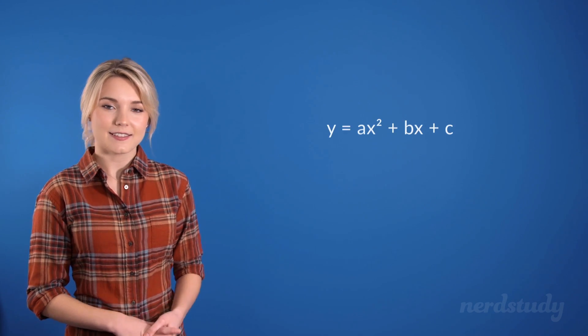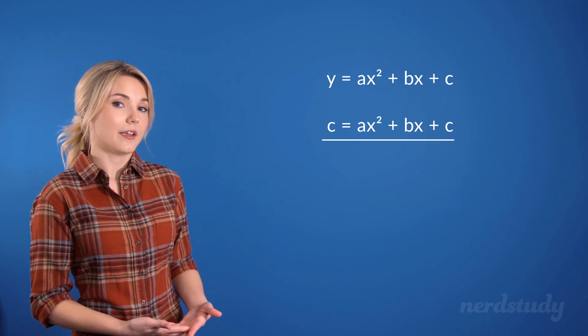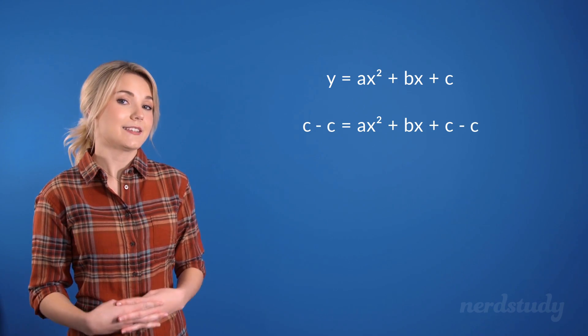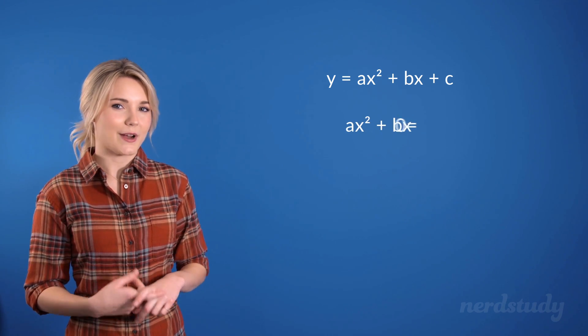So let's look at what we did in general, and by the end of this we'll find out something really cool together. When we're given the standard form, if we let y equal to c, then what we end up with is the following. Subtracting c from both sides gives us this. Let's just swap these around.